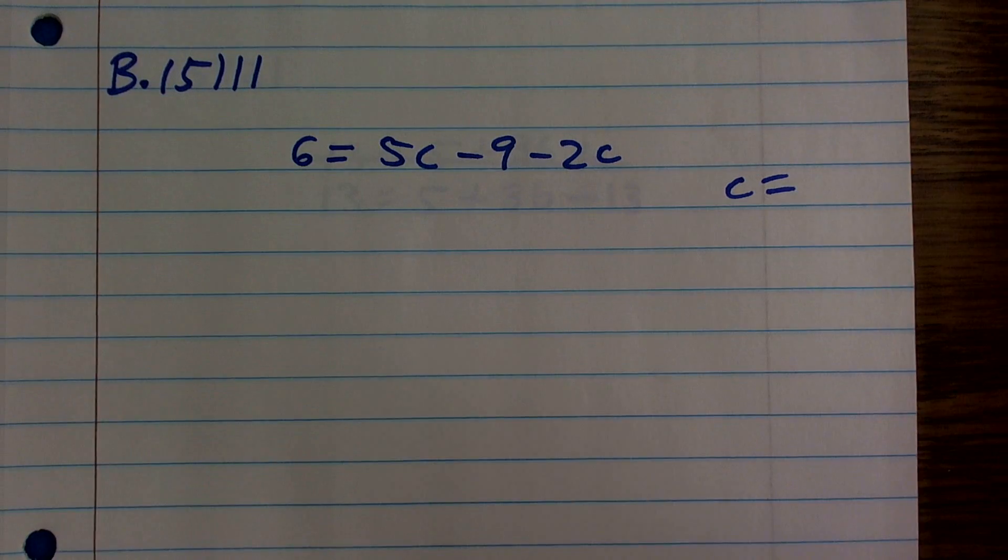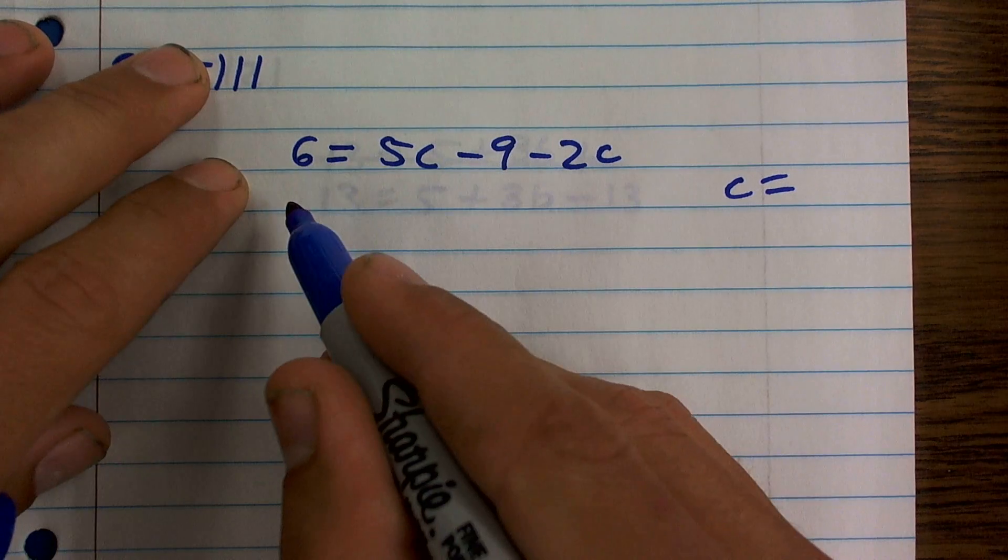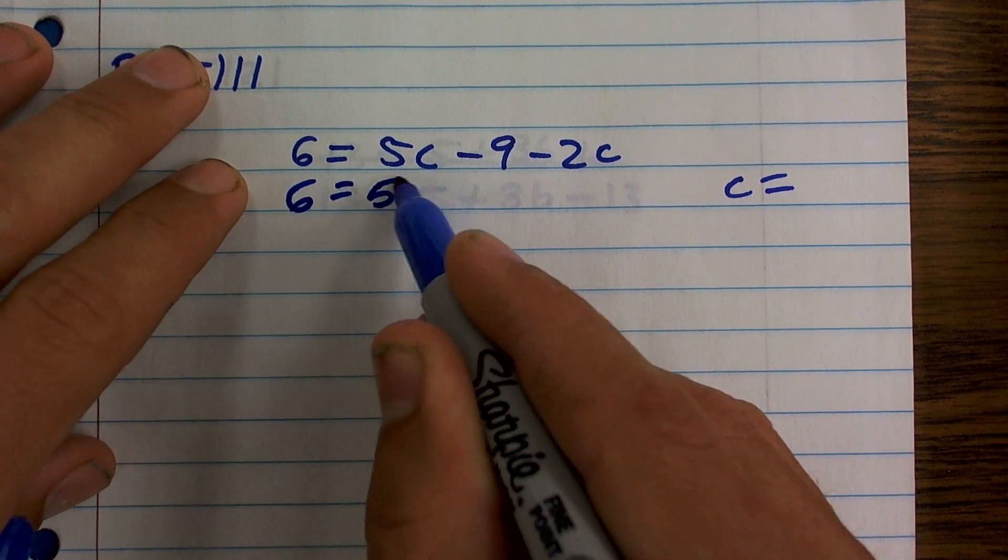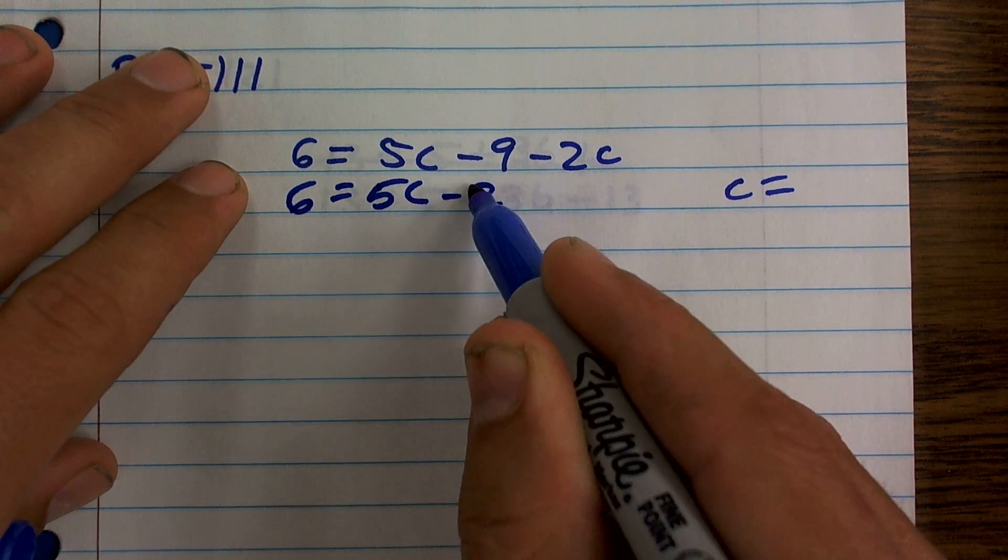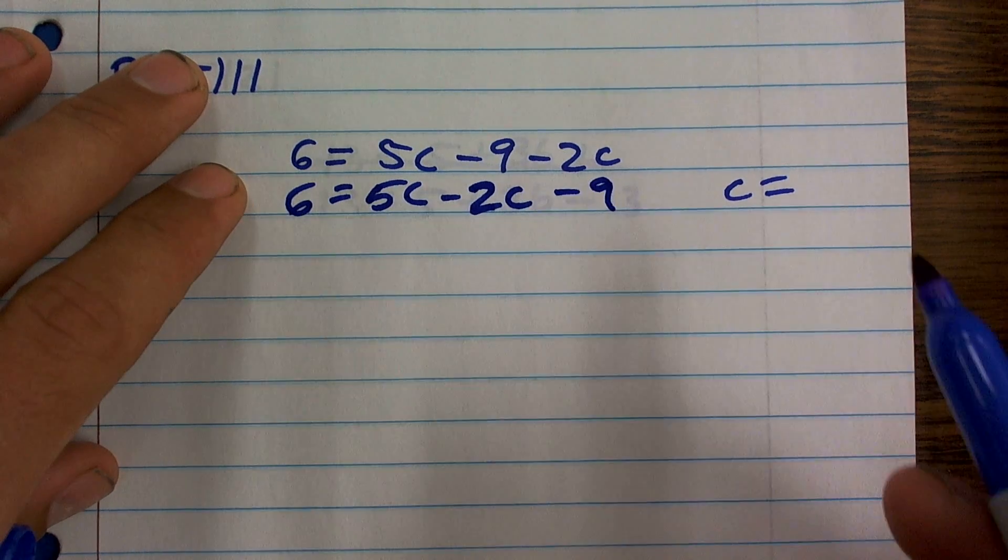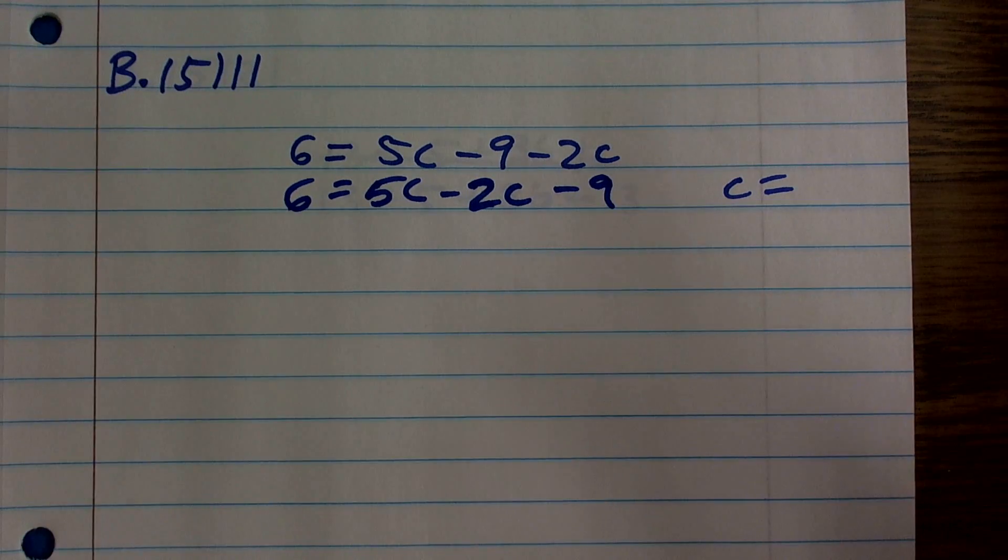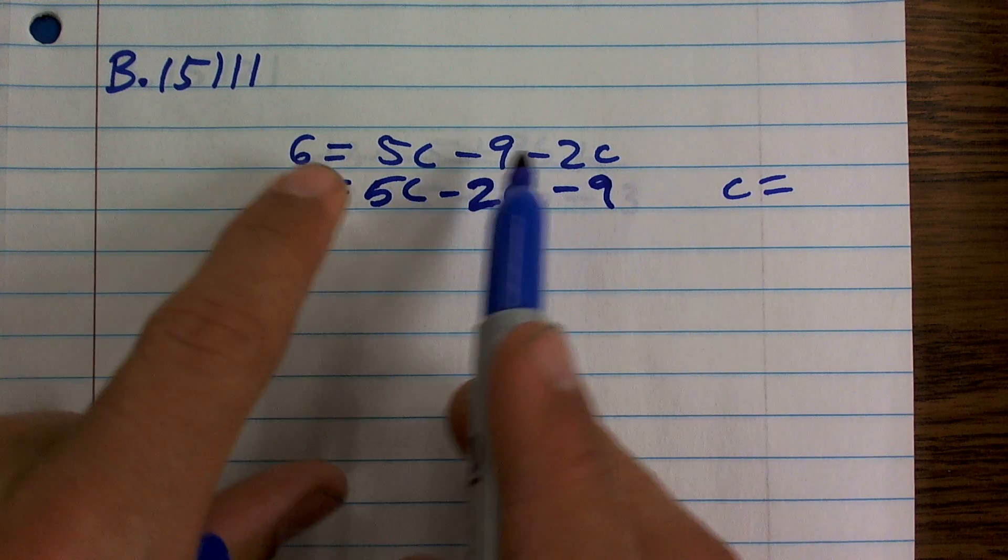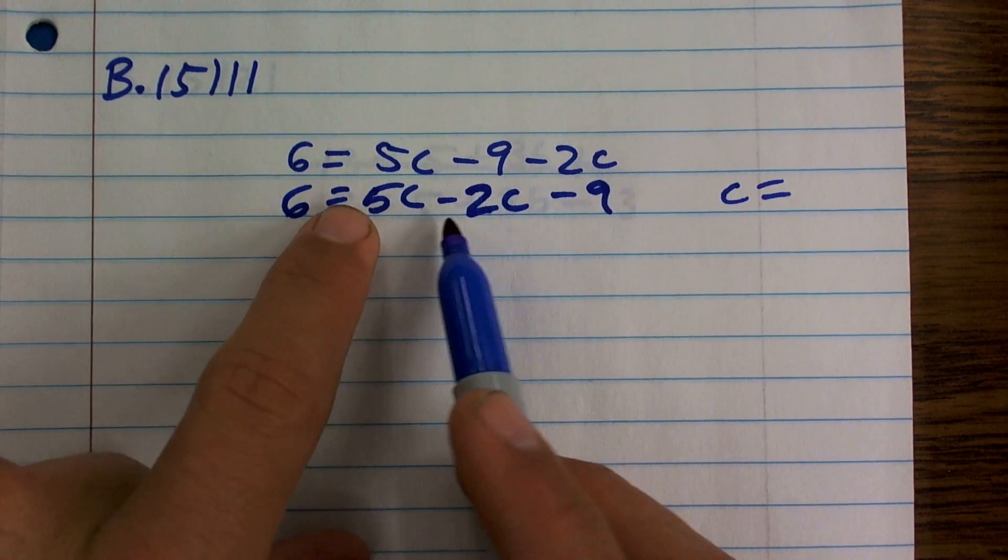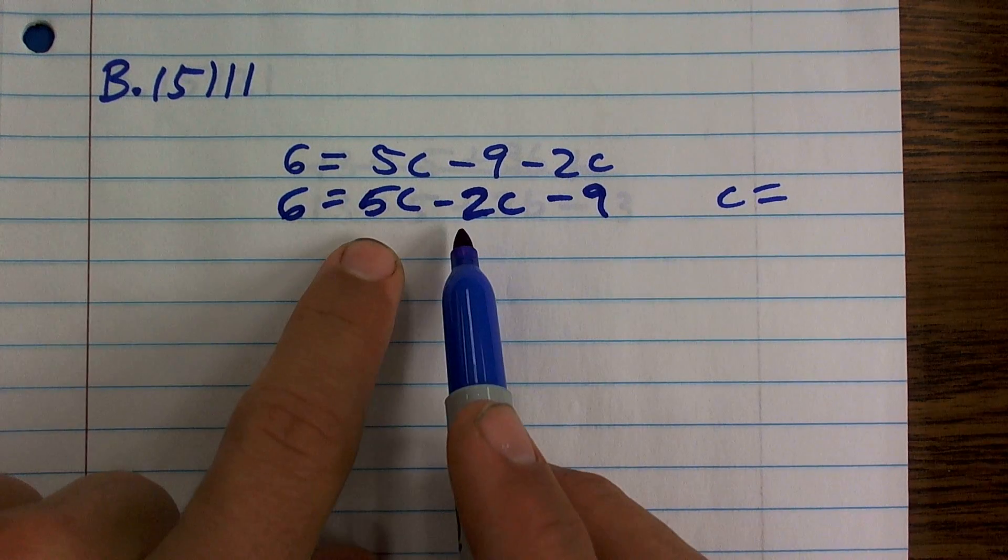By using the associative property, I'm going to rewrite this problem. So I can see 5c minus 2c minus 9. Now you can see that I can rearrange this so it works that I can have my 5c and my 2c next to each other.